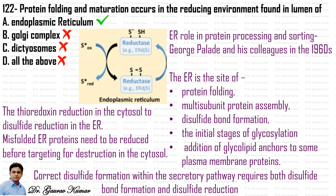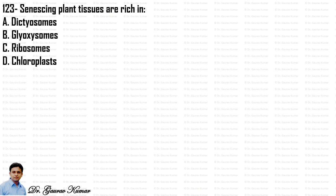The answer is endoplasmic reticulum. You can see in the figure how reductase acts and how a reducing atmosphere is important for protein folding and maturation in the ER lumen. Thioredoxin reduction in the cytosol versus disulfide reduction in the ER is shown. Correct disulfide formation within the secretory pathway requires both disulfide bond formation and reduction, hence a reducing atmosphere is important in the ER.